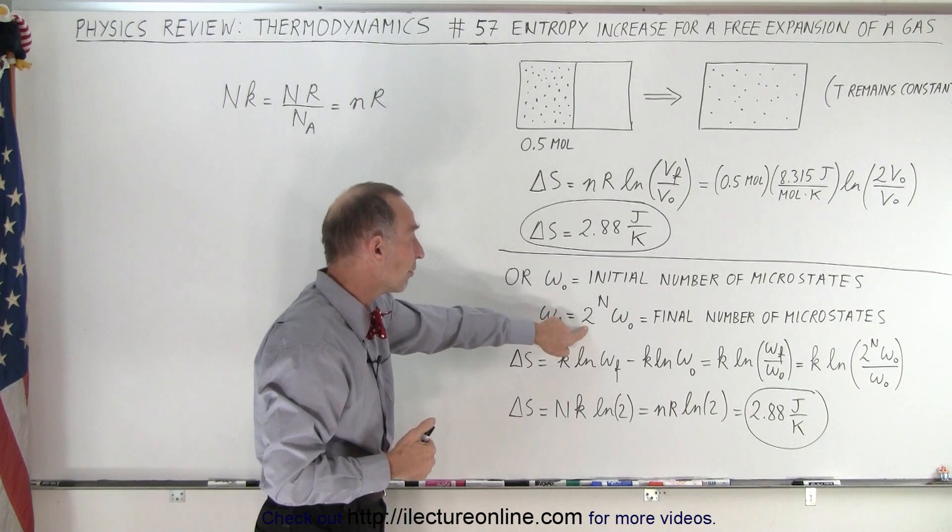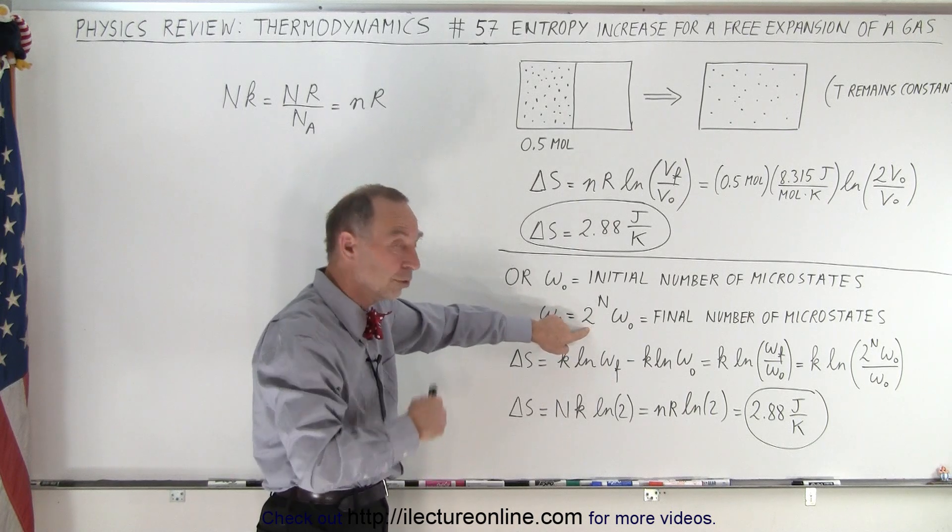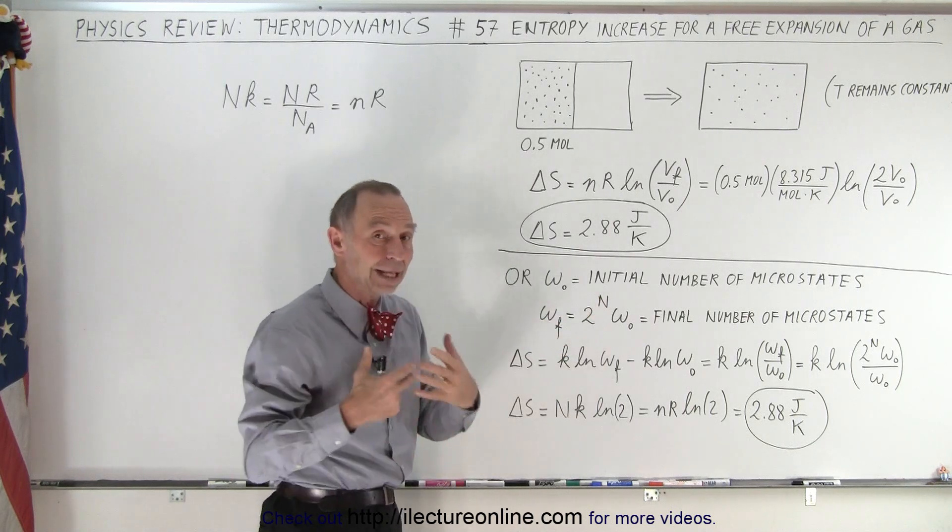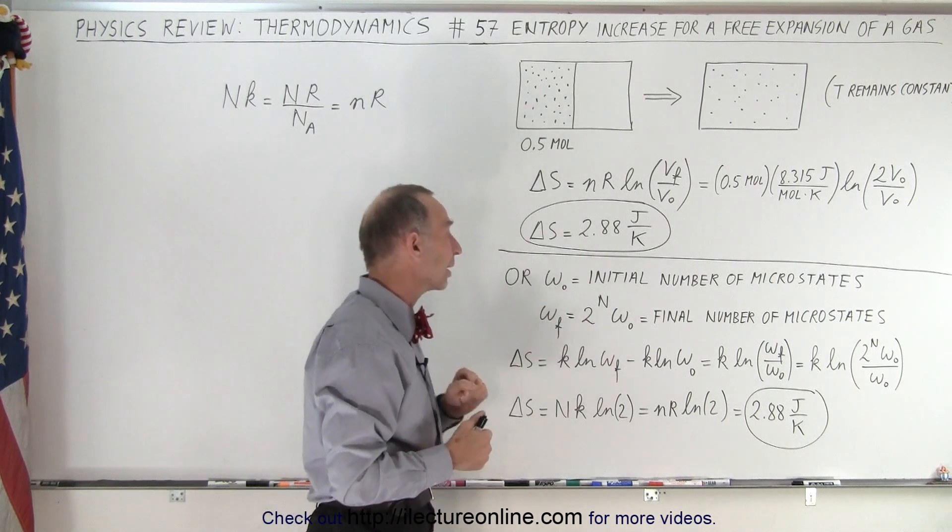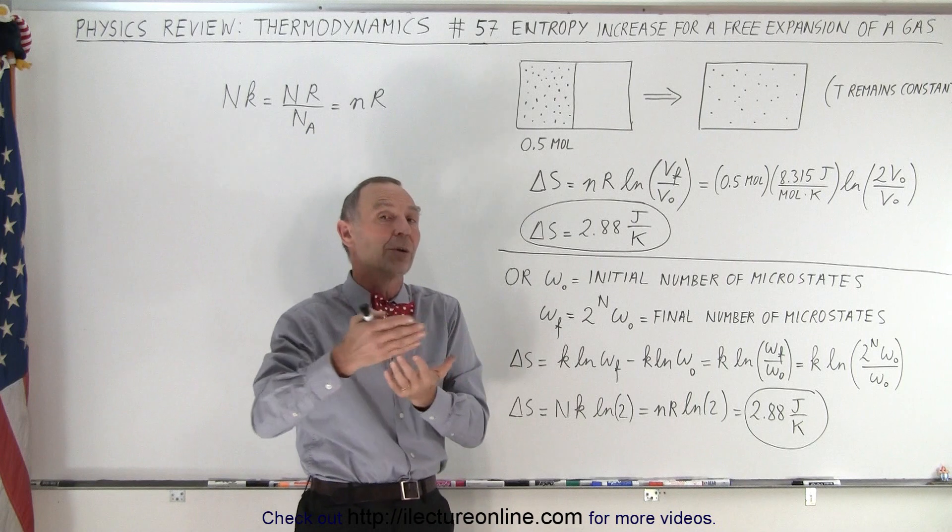Well since we now have doubled the volume we take the volume doubling to raise it to the n power, n being the number of molecules, times the original number of microstates which now gives us the final number of microstates.